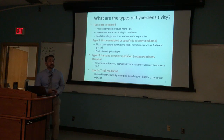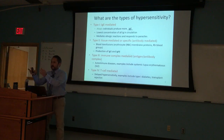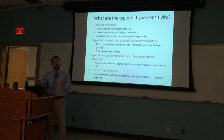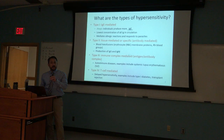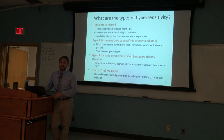Type 4 is also referred to as delayed hypersensitivity with T-cell involvement. It's associated with transplant rejection — that's the best way to remember it. Another example of type 4 is type 1 diabetes, where there's a cytotoxic T-cell mediated response towards the pancreatic beta islet cells.